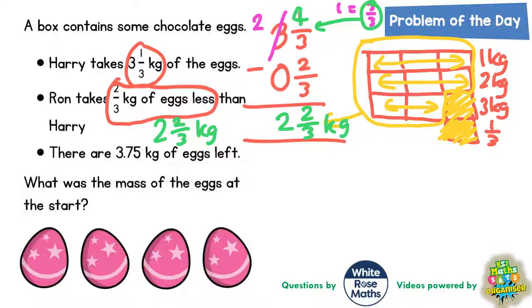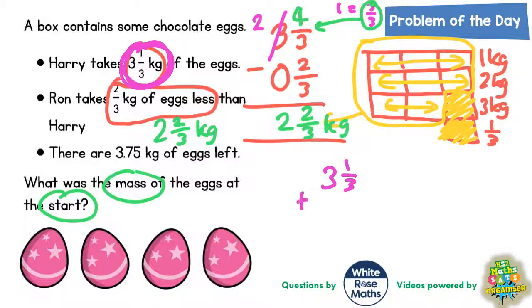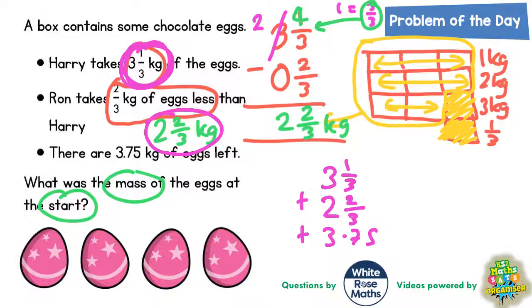We need to figure out what was the mass of the eggs at the start. The mass at the start must be the three and a third kilograms that Harry took, plus the two and two thirds kilograms that Ron took, plus the 3.75 kilograms of eggs that were left. Now let's figure out what we can do with this.